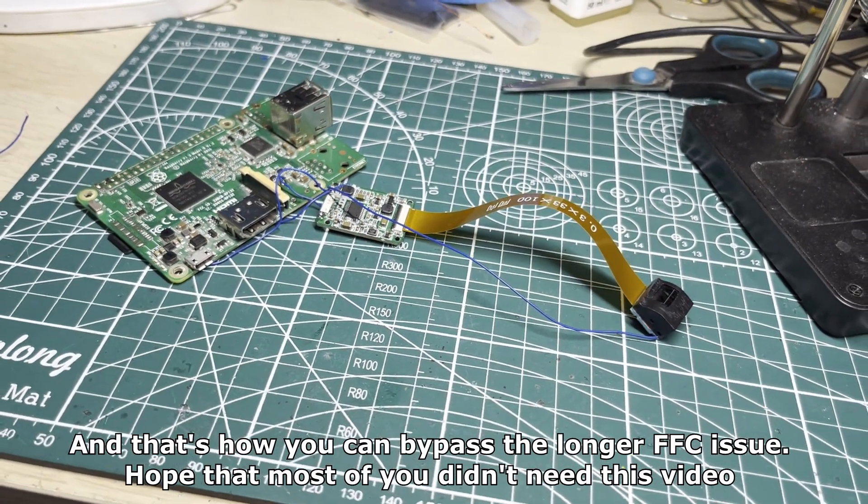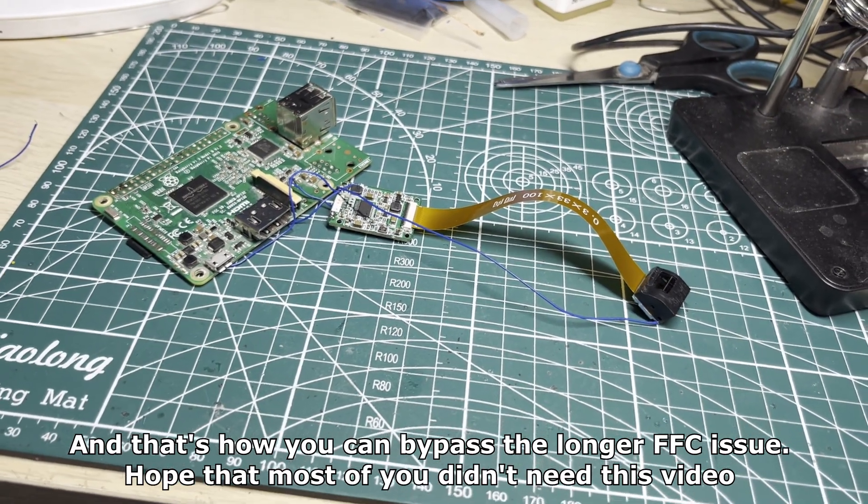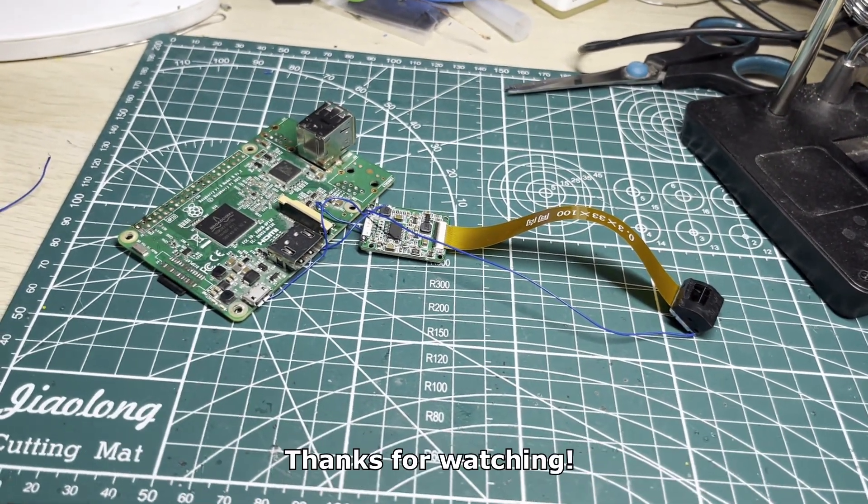And here it is with the magnifier. And that's how you can bypass the longer FFC issue. Hope that most of you didn't need this video. Thanks for watching.